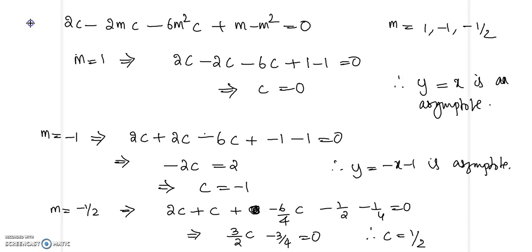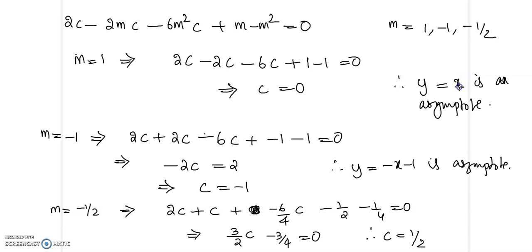This is the coefficient of x squared. When m is 1, we get 2c minus 2c, then minus 6c plus 1 minus 1 equal to 0. So 2c will cancel off and 1 will cancel off, giving c equal to 0. So the first asymptote is y equal to mx plus c, that is y equal to x.